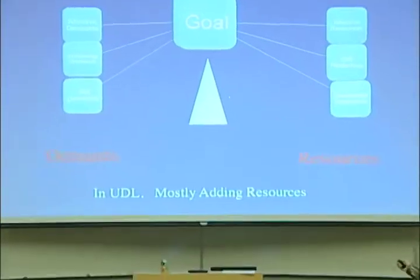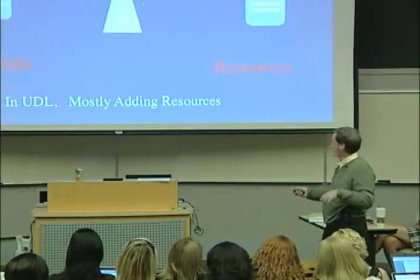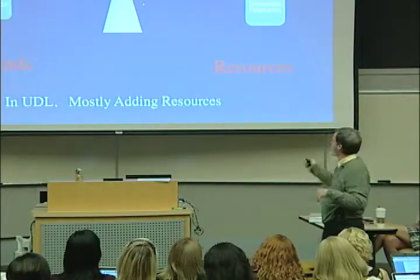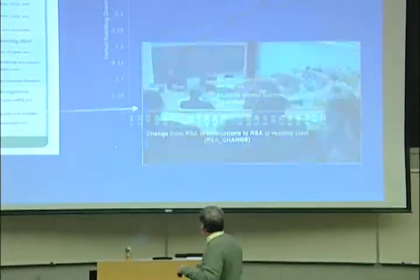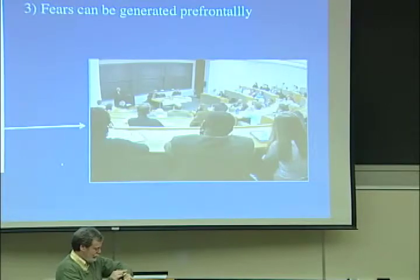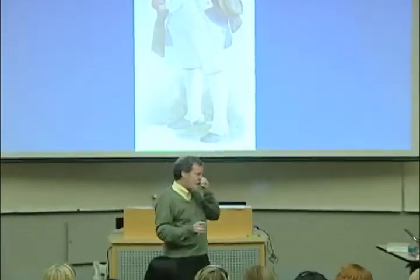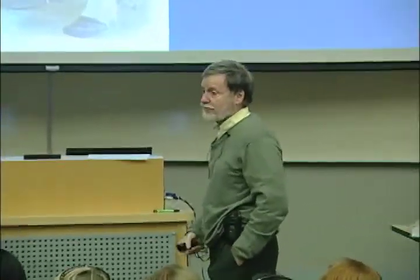What kinds of resources will we look at? Things like books that read themselves aloud, so that decoding isn't the threat, or doing tasks with peers so they have affective resources. We'll talk about what kinds of things we can do, but the key is adding resources. And I just want to say: telling someone 'don't be afraid' is of no value — we need to discuss the active things we can do.